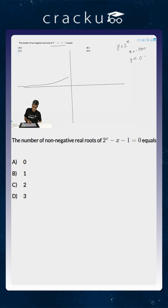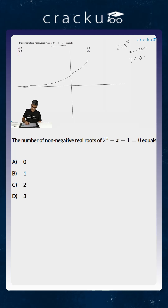When x is equal to 0, y will be equal to 1. It will continue to rise. When x is equal to 1, y is equal to 2, and it will continue to go exponentially.